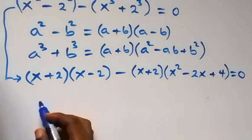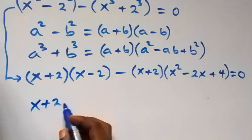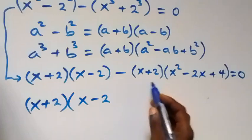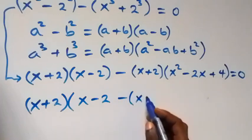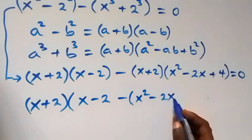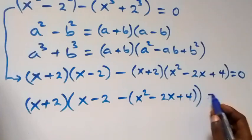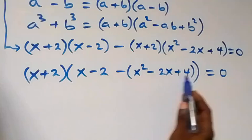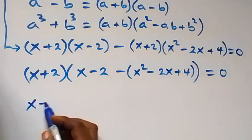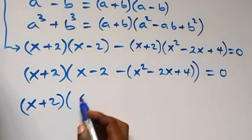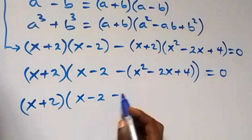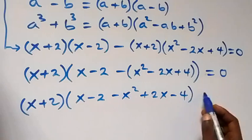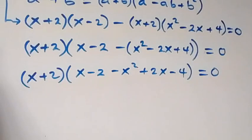We have (x plus 2) common, let's factor it out. So we have (x plus 2) times the bracket: here we are left with x minus 2, then minus (x squared minus 2x plus 4), now equals to zero. Opening the inner bracket: (x plus 2) times (x minus 2 minus x squared plus 2x minus 4) equals zero.